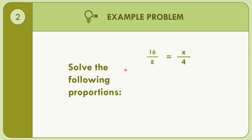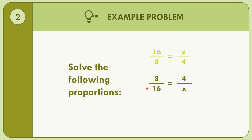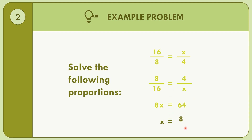Example 2: 16 over 8 equals X over 4. Using the reciprocal property: 8 over 16 equals 4 over X. Then applying the cross product property: 8 times X equals 16 times 4, so 8X equals 64. Dividing both sides by 8, X equals 8.